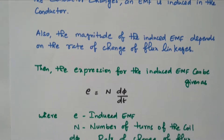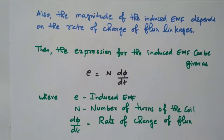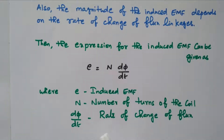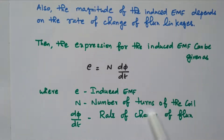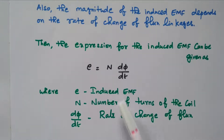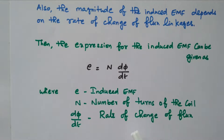N is nothing but the number of turns available in the coil. E is the induced EMF, N is the number of turns of the coil, and dφ/dt is nothing but the rate of change of flux. So, E = N dφ/dt is the equation from Faraday's law.